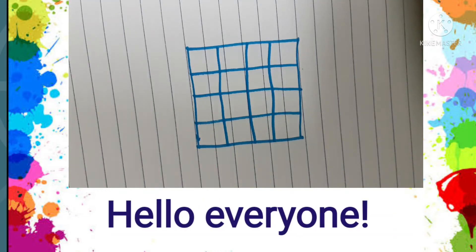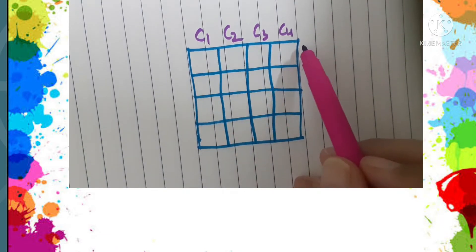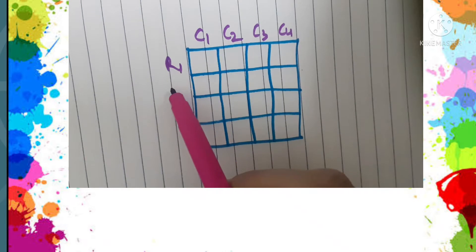Hello everyone, are you ready to solve today's puzzle? It's an interesting number puzzle. We are given a four by four grid, so I am labeling the columns C1, C2, C3, C4, and there are four rows.